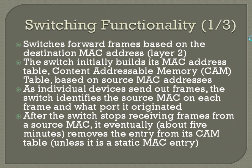Switching functionality: switches forward frames based on the destination MAC address. Whenever a frame comes out, you're going to have a source MAC — where it's coming from — and a destination MAC address. If it forwards something out, it's going to forward it out to everyone and then add that to the database.